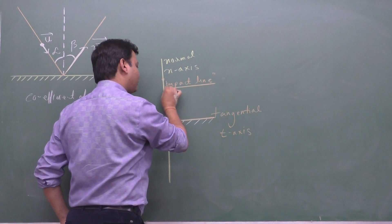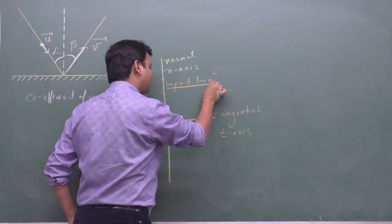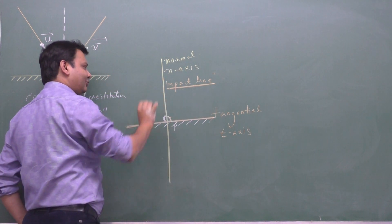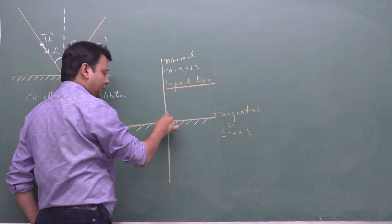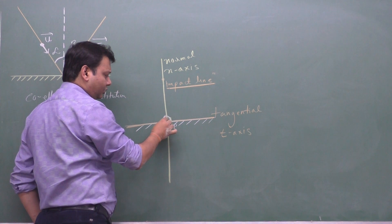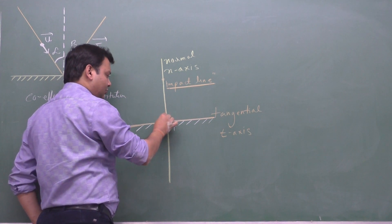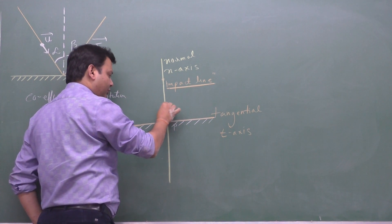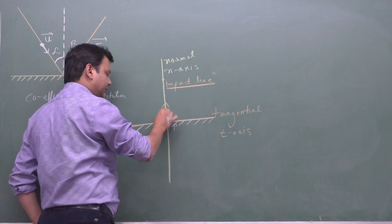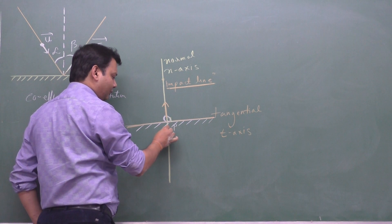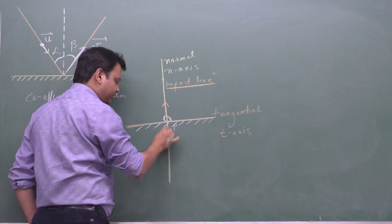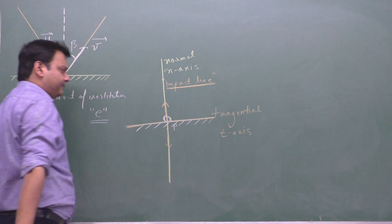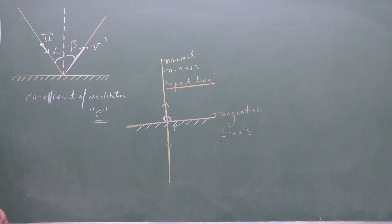The impact force acts along the normal axis. By Newton's third law, the floor exerts a force on the ball and the ball exerts a force on the floor, and this collision force acts along the line of impact — the N-axis.